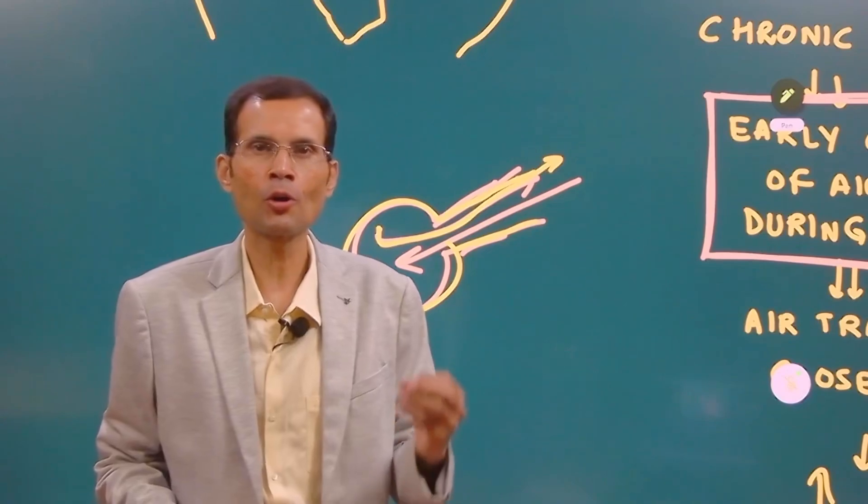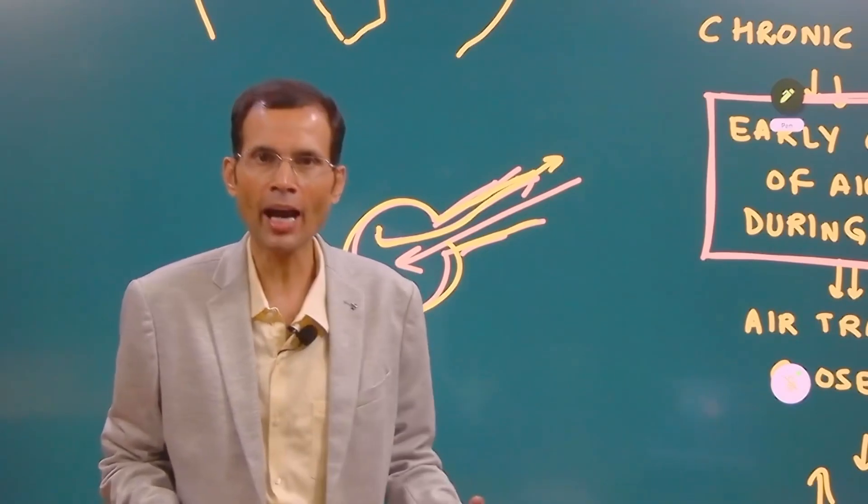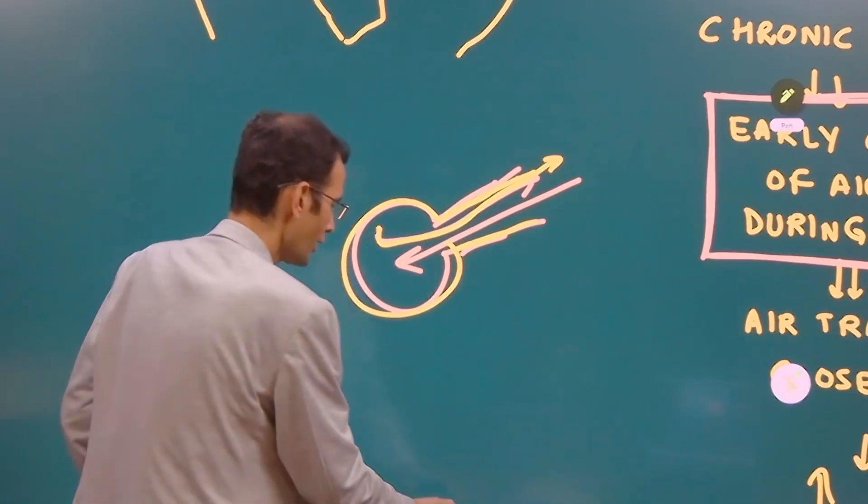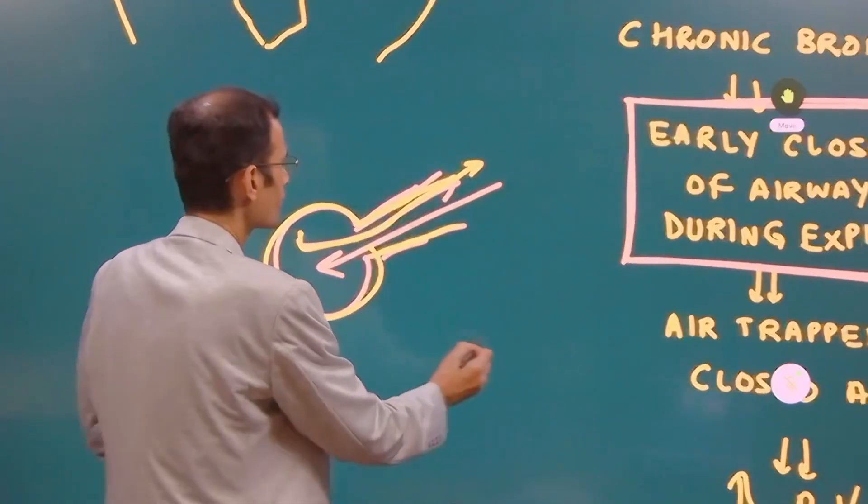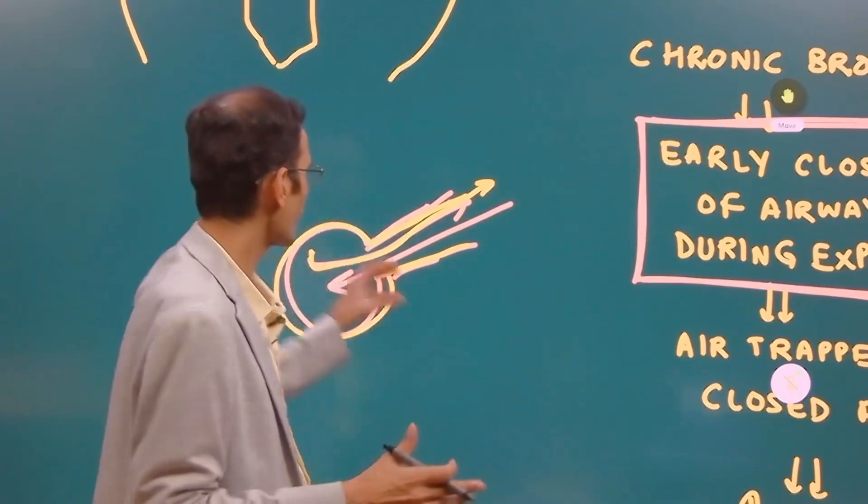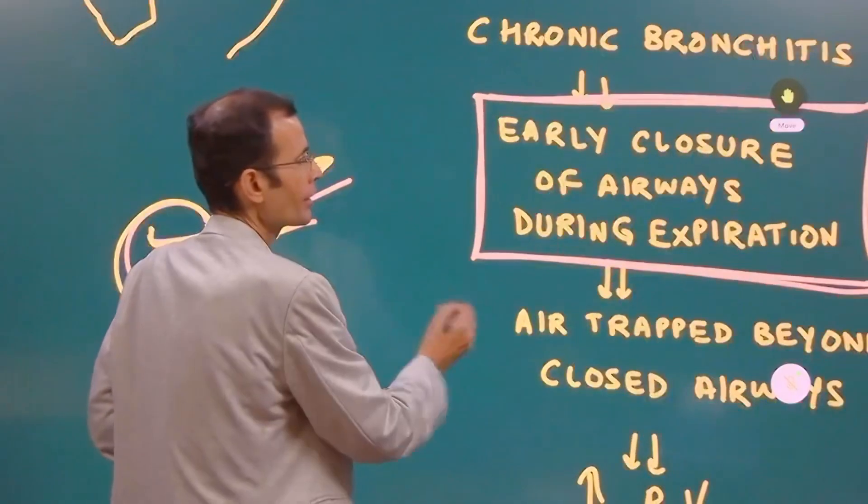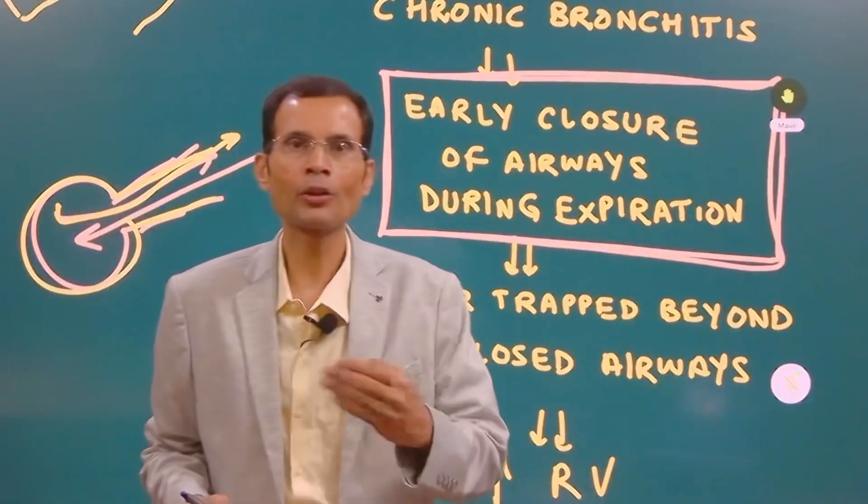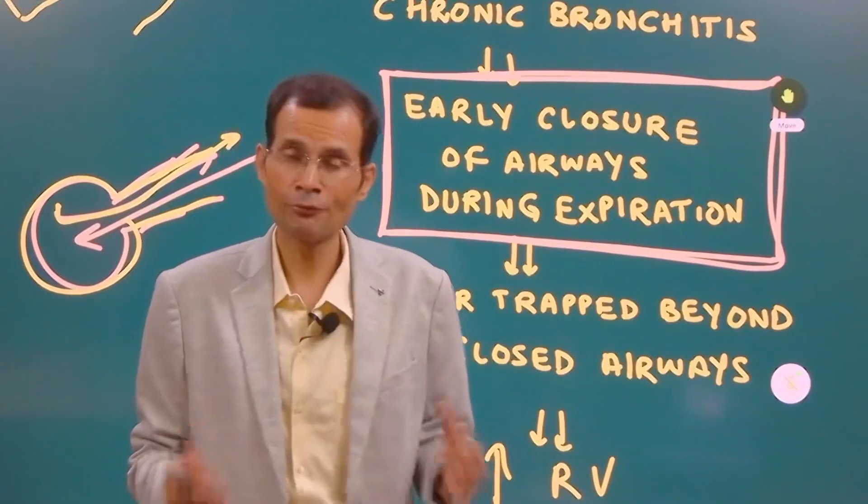So small amounts of air are getting trapped. Gradually what happens is there is destruction because alveoli are over distended. So there is destruction of the alveolar septa and then chronic bronchitis will progress to emphysema.